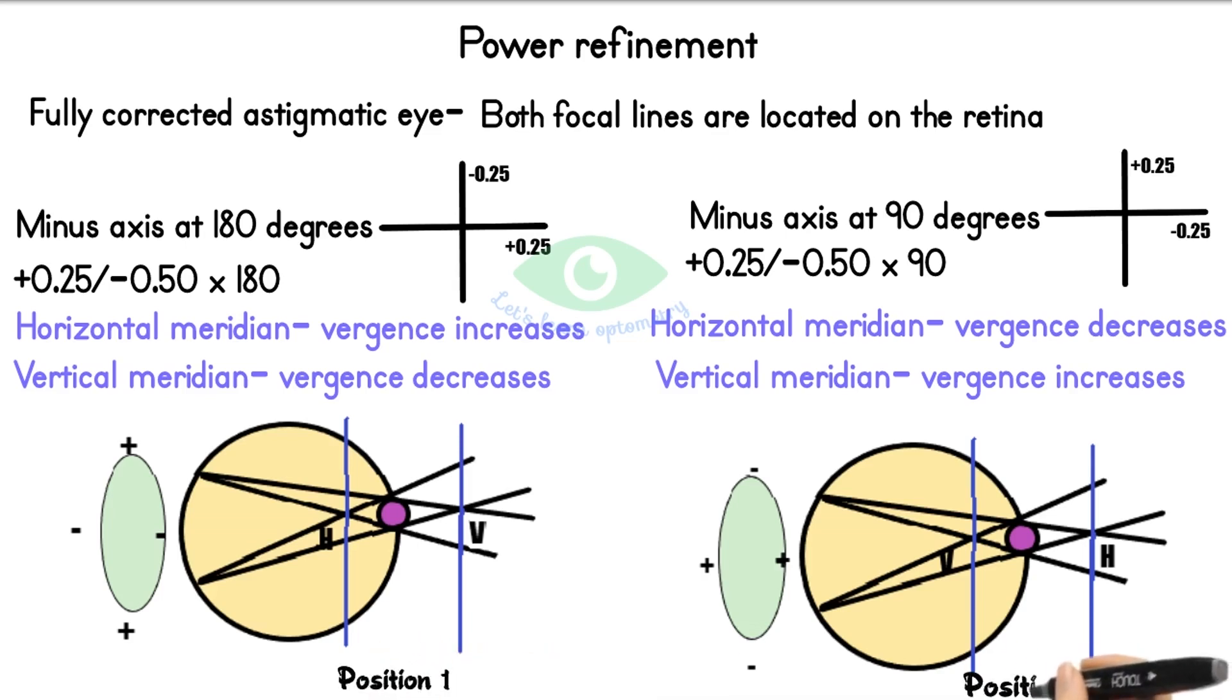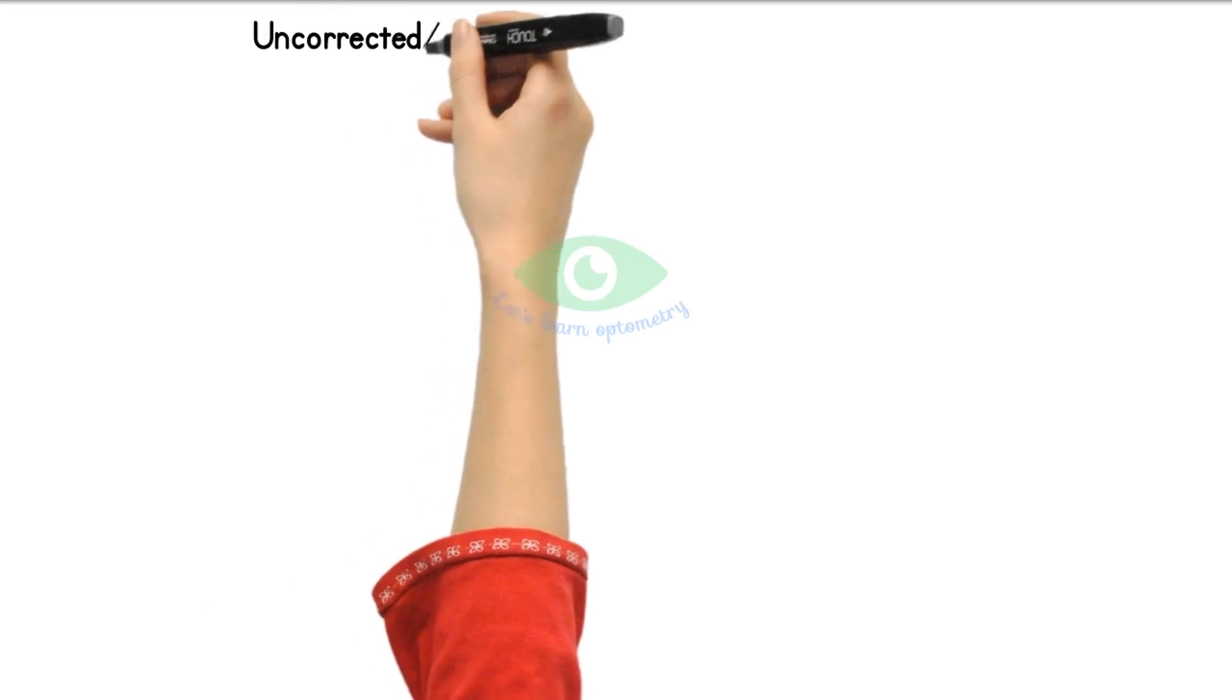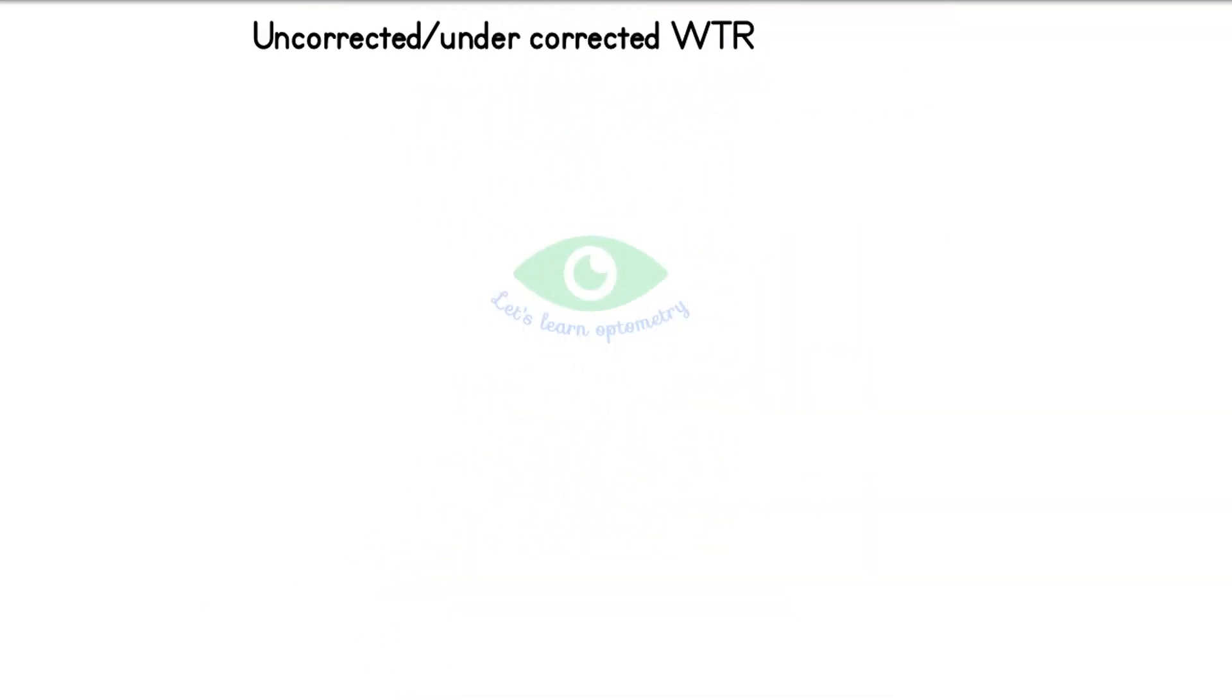Now consider an uncorrected or under-corrected with-the-rule astigmatic eye. Here the vertical meridian will focus before the horizontal meridian. A special mention here is that always remember that rays of light traveling in the vertical meridian will form the horizontal focal line.